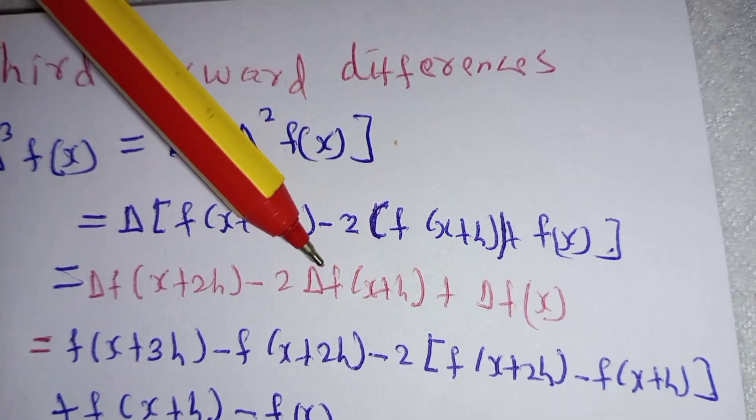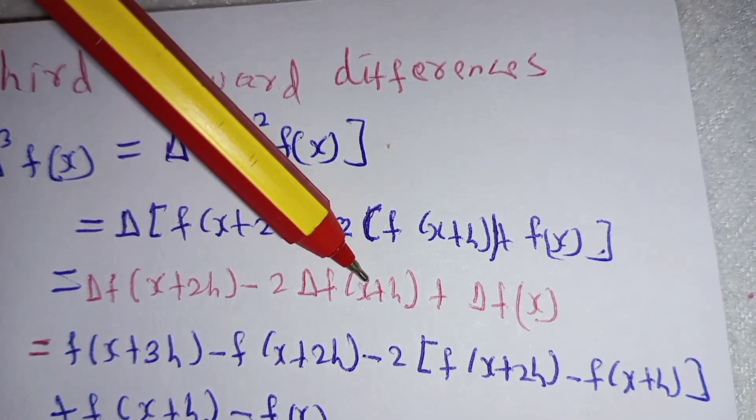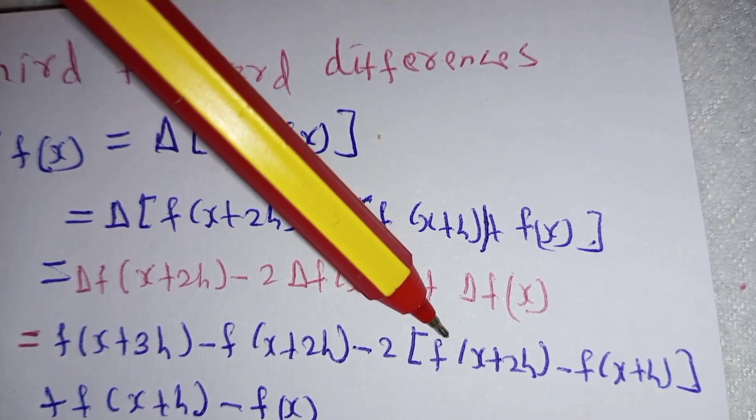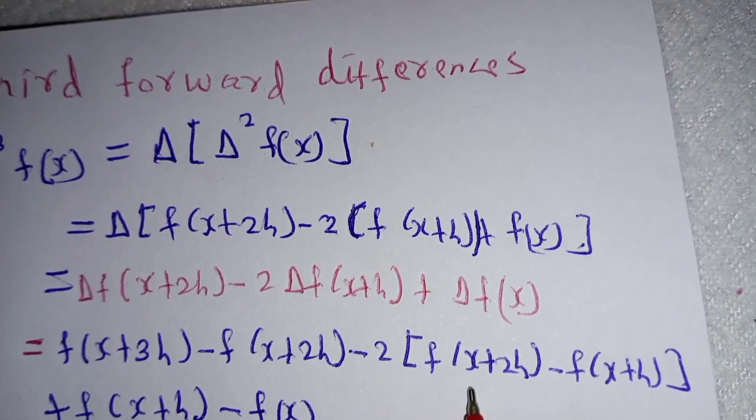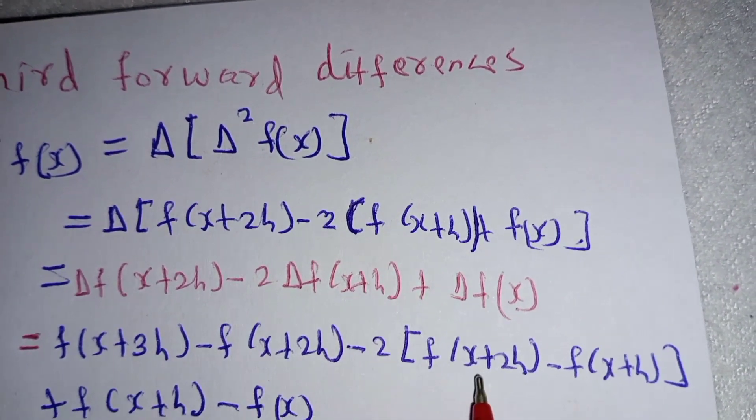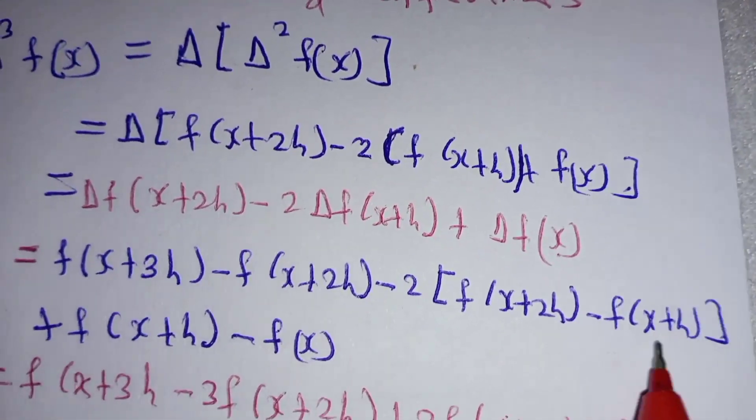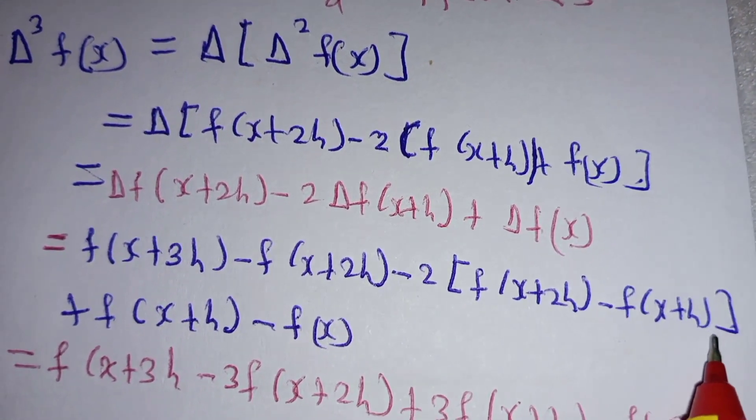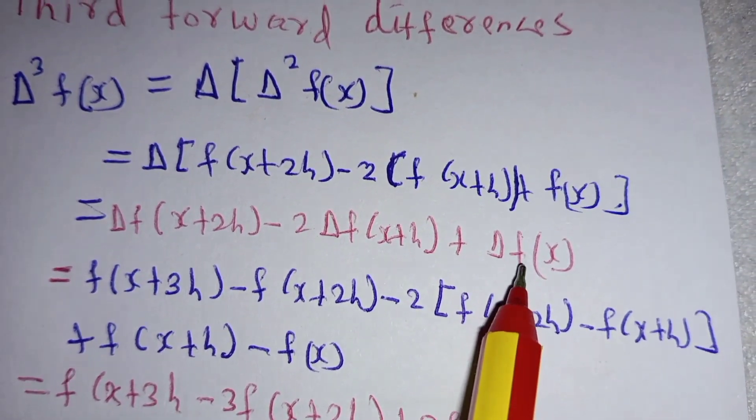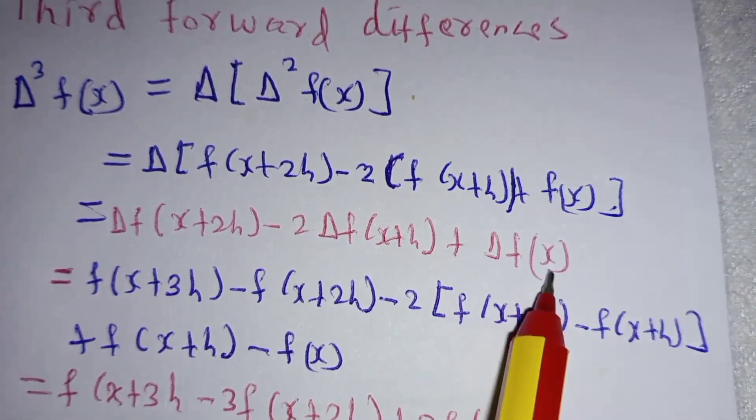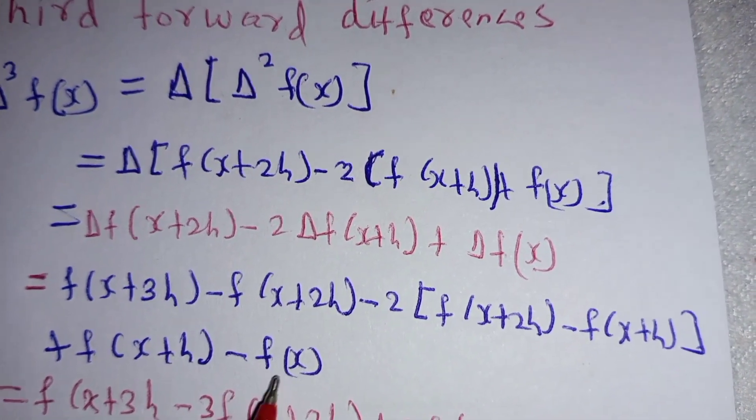Then, Δf(x+h) is f(x+2h) - f(x+h). Plus the forward difference of f(x) is f(x+h) - f(x).